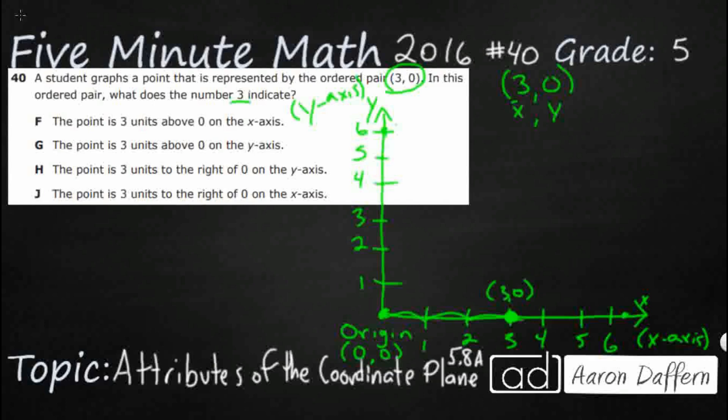F. The point is 3 units above 0 on the x-axis. Well, first, this is wrong for several reasons. First, we're not above 0. And we're definitely not moving up the x-axis because that first digit 3 moves us left to right on the x-axis.